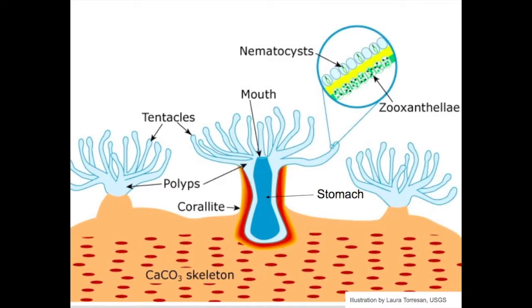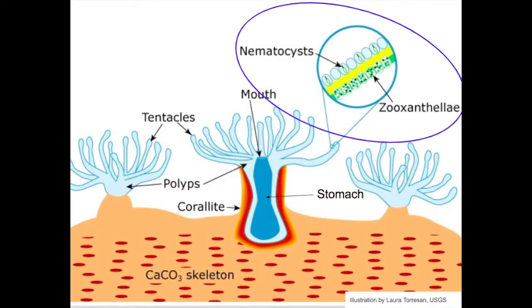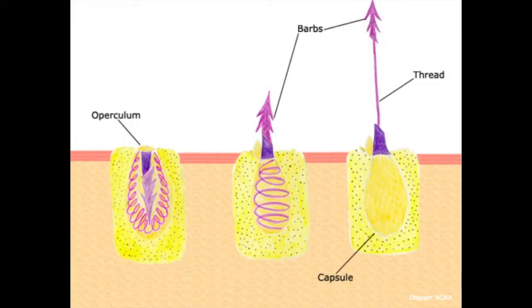Every coral has a cup-shaped skeleton called the corallite. An individual coral's body, called the polyp, sits on top of the corallite while it's alive, and after it dies its skeleton adds to the structure of the coral reef. A polyp is made up mostly of a stomach with a mouth on top. Its mouth is surrounded by tentacles, which makes it look like an upside-down jellyfish. Inside these tentacles are stinging cells, which corals can use to stun their prey and pull the food into their mouth. Corals can eat things like microscopic plankton and tiny fish.